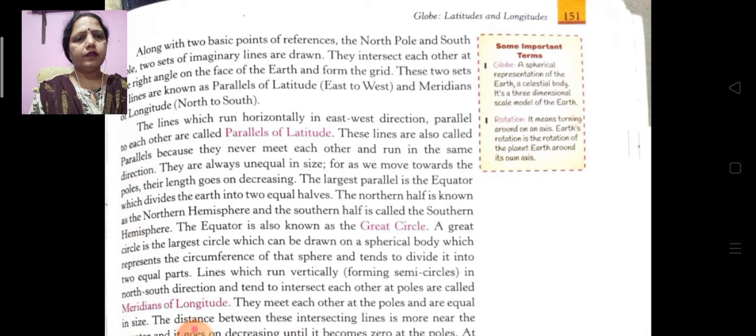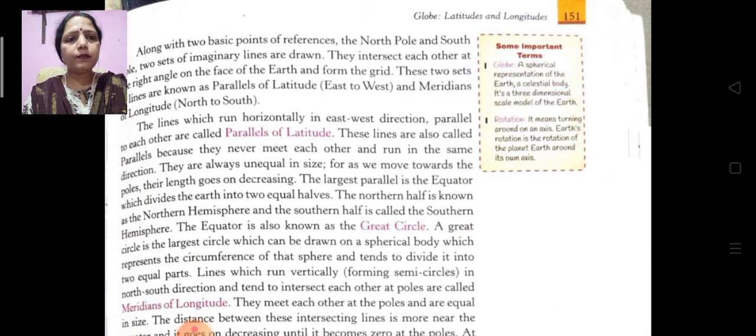Earth's rotation is the rotation of the planet earth around its own axis. Now along with the two basic points of reference, the north pole and south pole, two sets of imaginary lines are drawn. They intersect each other at right angles on the face of the earth and form the grid. These two sets of lines are known as parallels of latitudes, east to west, and meridians of longitudes, north to south.